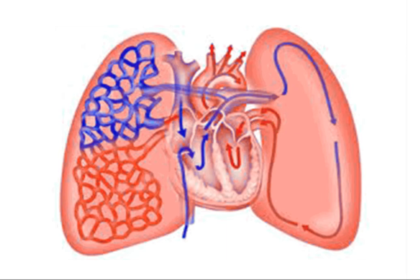The oxygenated blood is then pumped from the left atrium to the left ventricle and from the left ventricle to the aorta, which carries the oxygenated blood to all parts of the body. Blood flow through the body will always enter this part of the circuit.